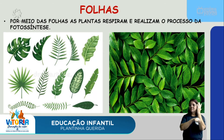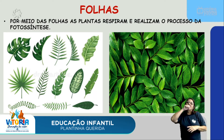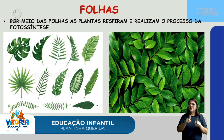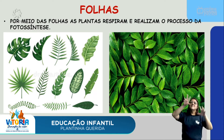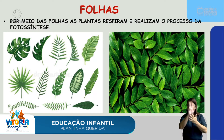Agora vamos falar um pouquinho sobre as folhas. Por meio das folhas, as plantas respiram. Vocês sabiam que as plantas respiram por meio das folhas? Isso mesmo, elas respiram. Por isso que elas são seres vivos. E realizam também o processo da fotossíntese, da produção do alimento. A planta produz o seu próprio alimento através da fotossíntese, e esse processo é realizado pelas folhas. Olha aí, diferentes tipos de folhas, vejam as imagens, quantas folhas diferentes.